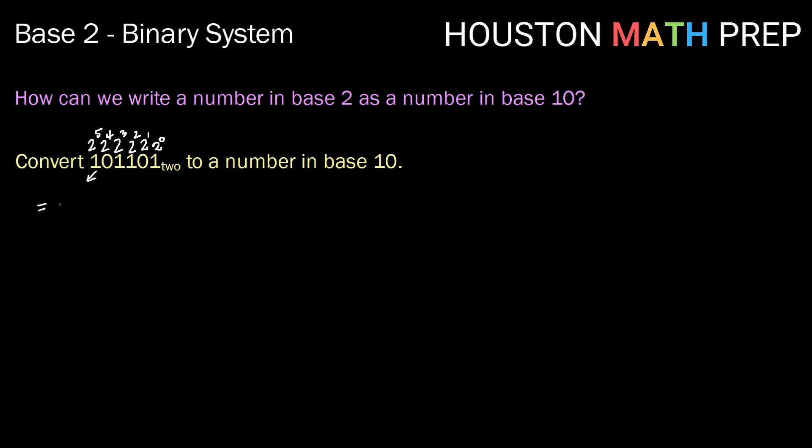plus 0 groups of 2 to the 4th, plus 1 group of 2 to the 3rd which is 8, plus 1 group of 2 squared which is 4, plus 0 groups of 2, plus 1 group of 2 to the 0 power which is 1. So all together we have 32 plus 8 plus 4 plus 1, or 45 in base 10.